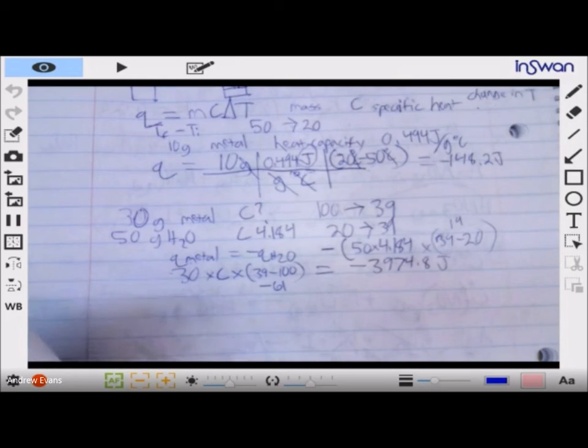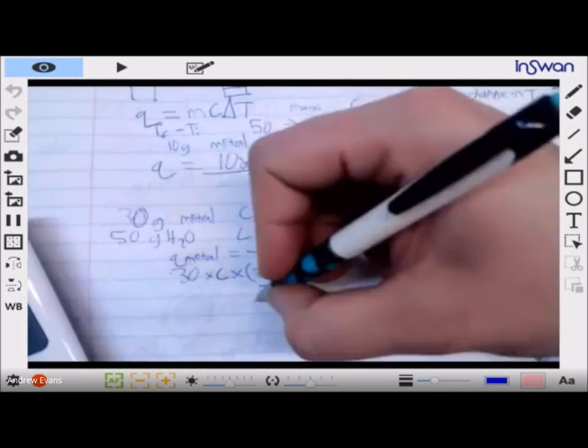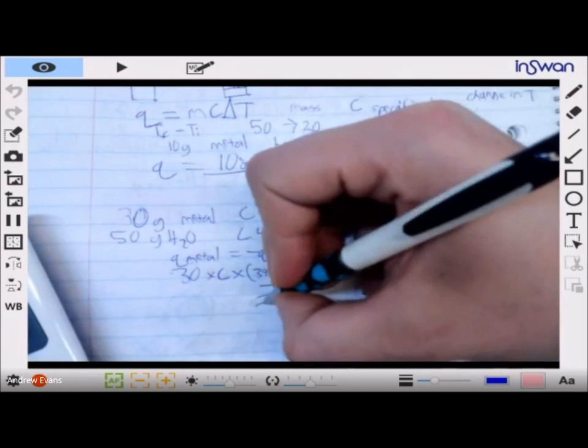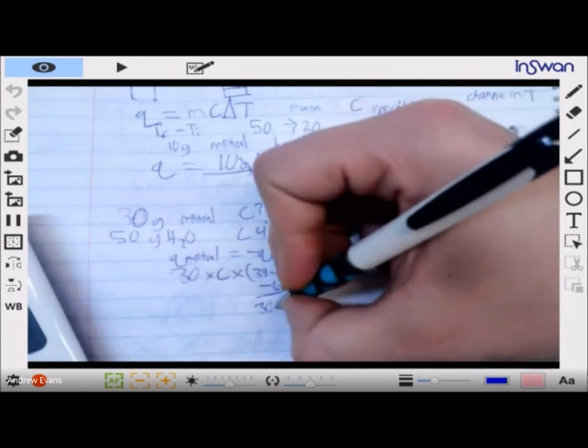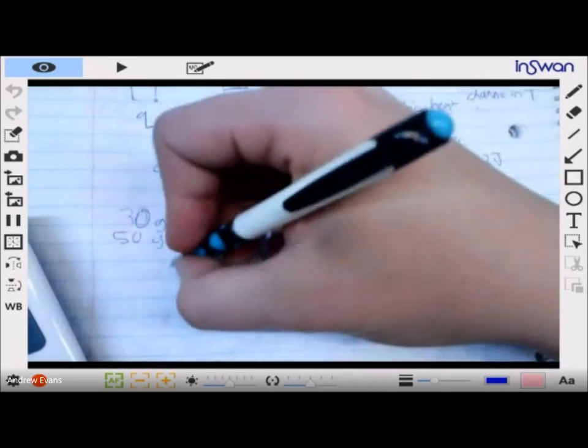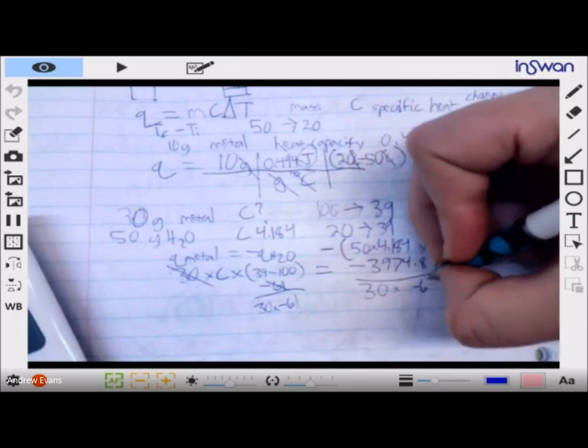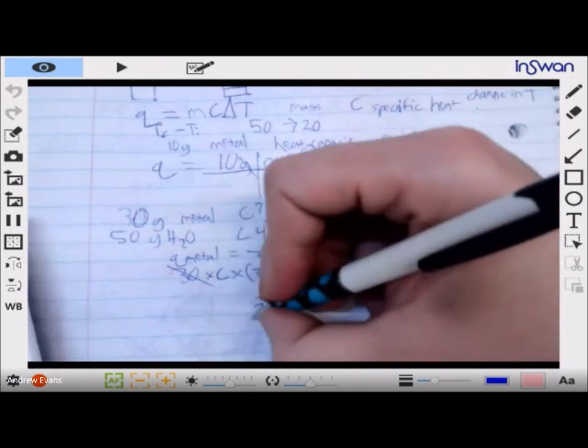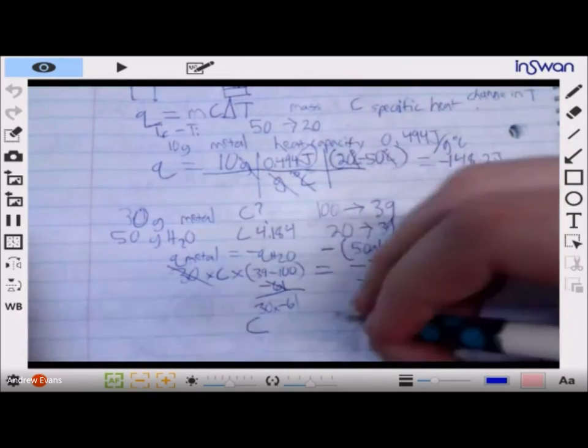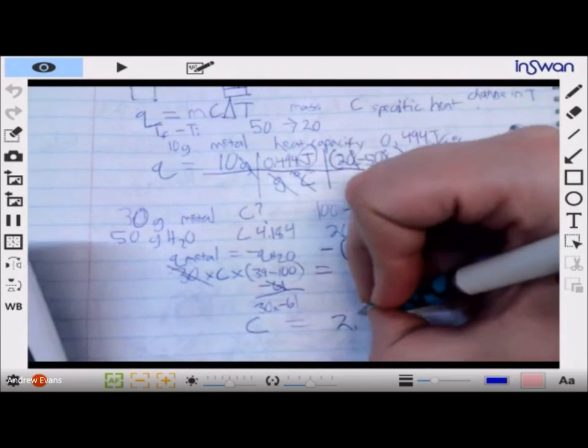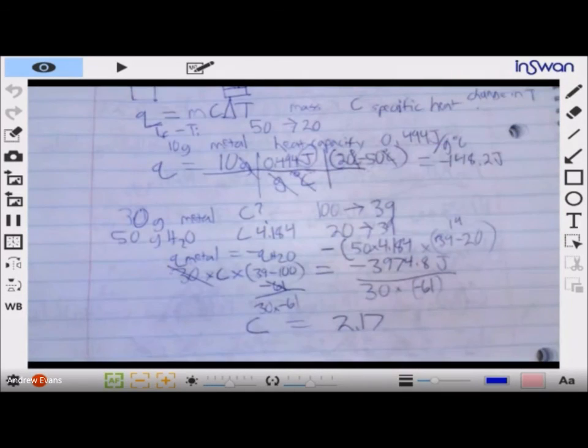And our heat - if I do that, divide both sides by 30 and negative 61, we're going to get our heat capacity is equal to 2.17. That's a little high for a metal, but that's fine - it's an unknown metal, maybe it's a new metal, I don't care.